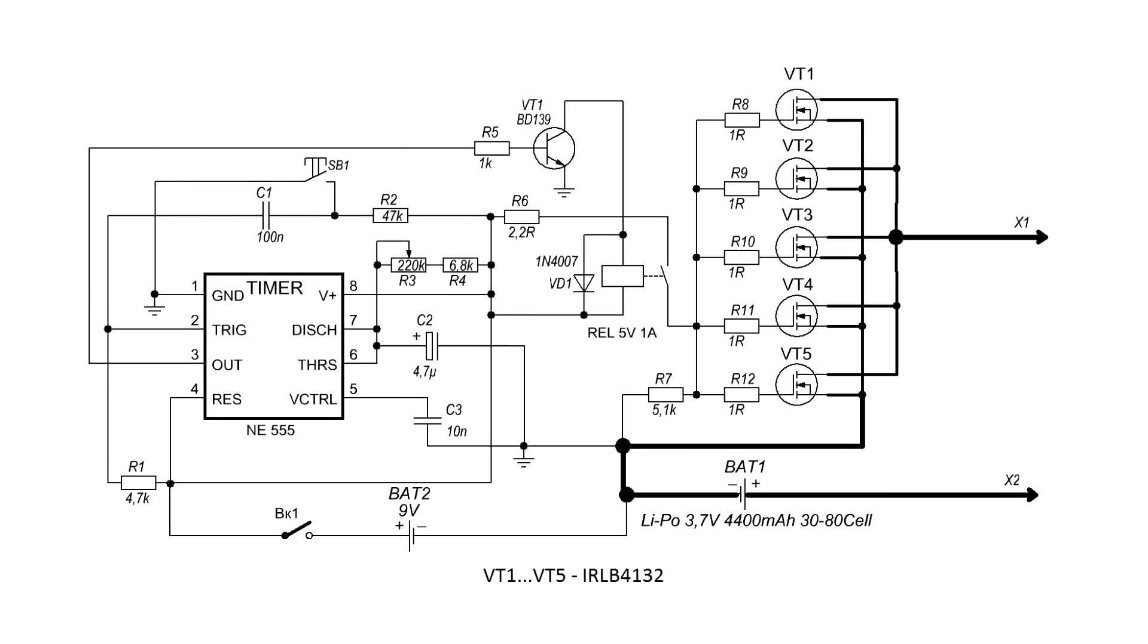The design of the welding machine consists of three main parts. The battery, control system, timer and power unit on four powerful field effect transistors. Timer has been built on the well-known microchip NE555, but the circuit isn't quite standard.